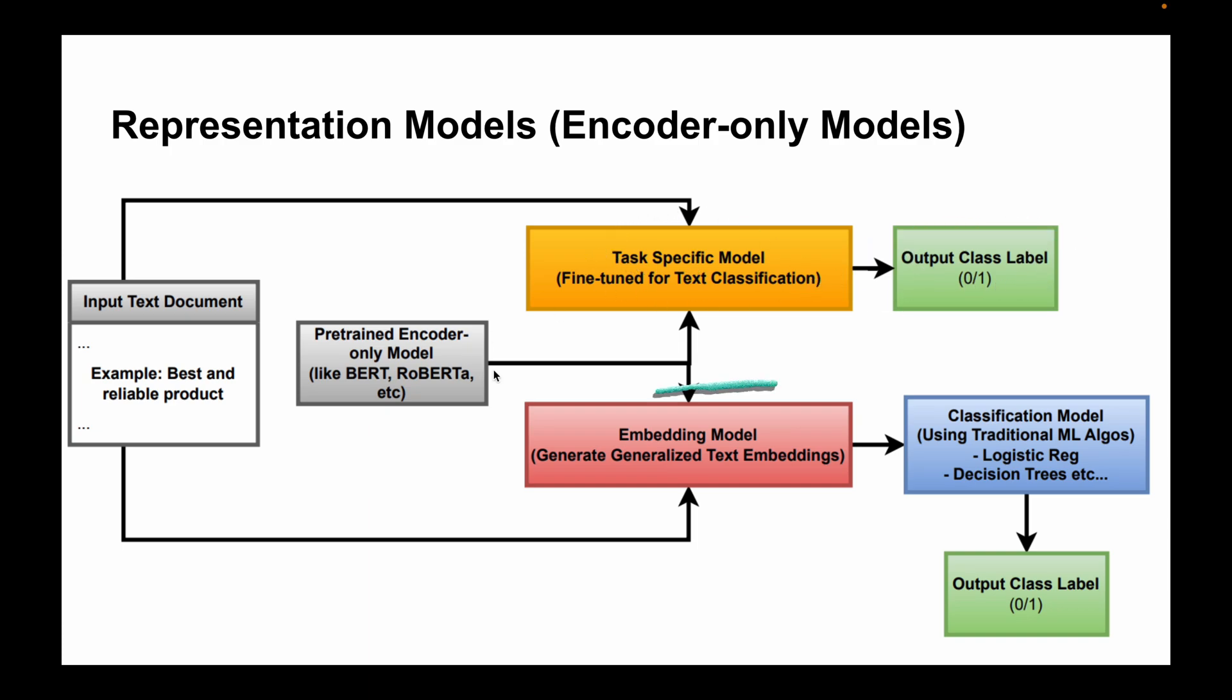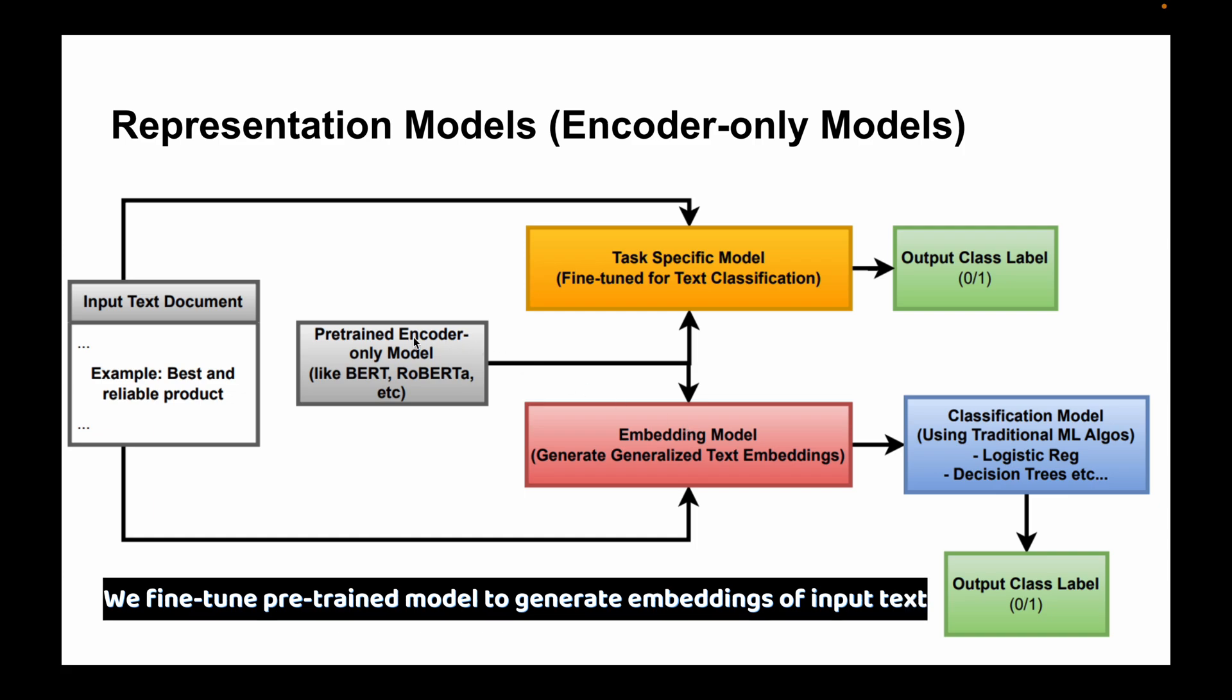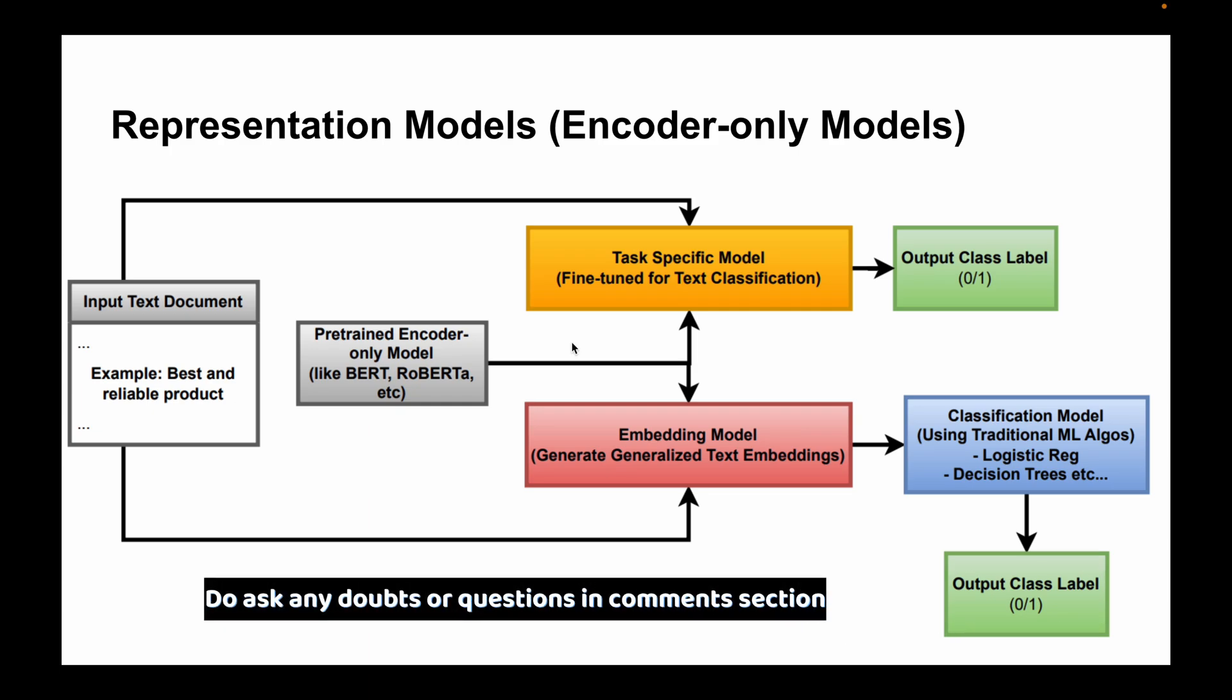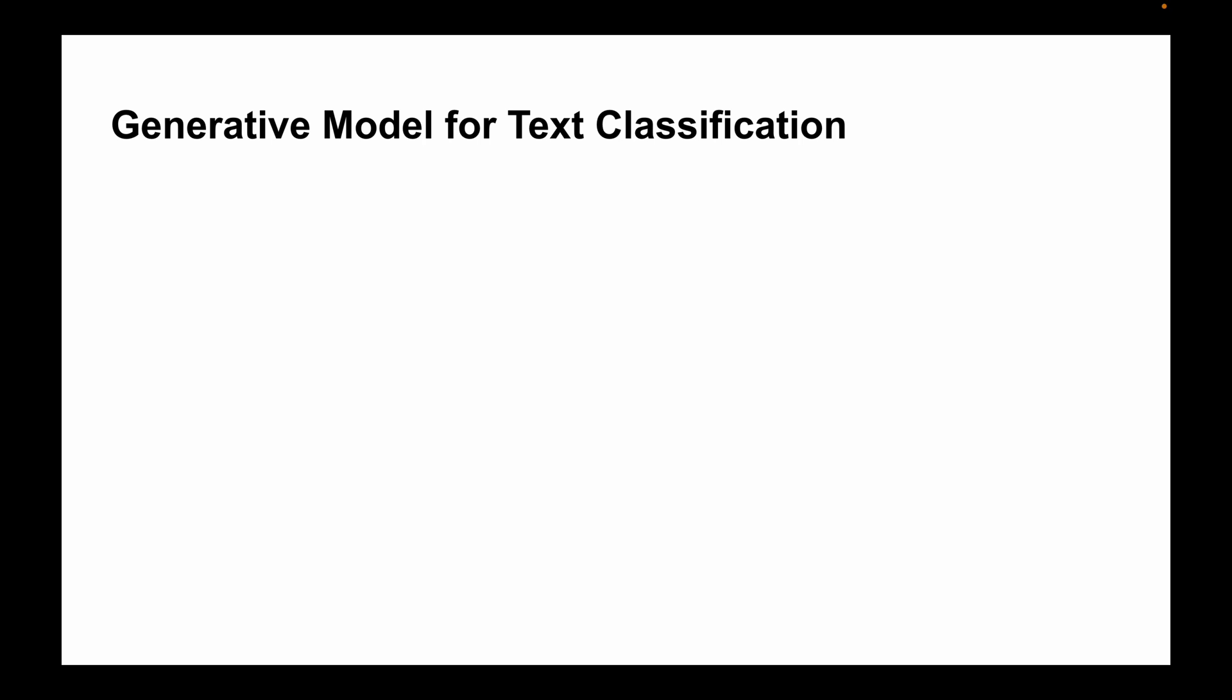Now let's look at the second approach using embedding models. Again, we select a pre-trained encoder model. We fine-tune this model like BERT or RoBERTa to generate embeddings of the input sentence. Then these embeddings are used as features, and we can use any traditional ML classification model to output the class label. If you have any doubts about any part, ask in the comment section.